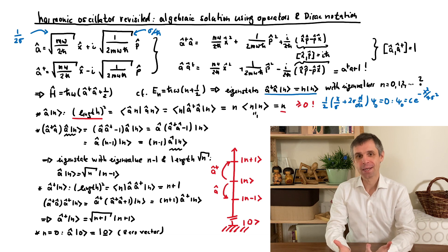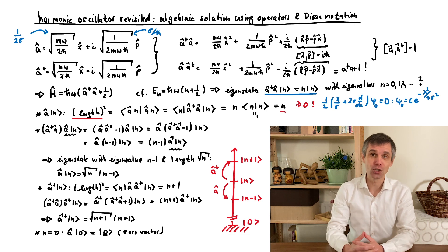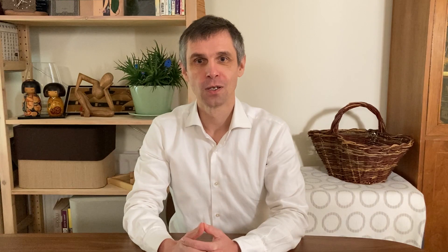Because of this, A is then called an annihilation operator and A-dagger a creation operator.